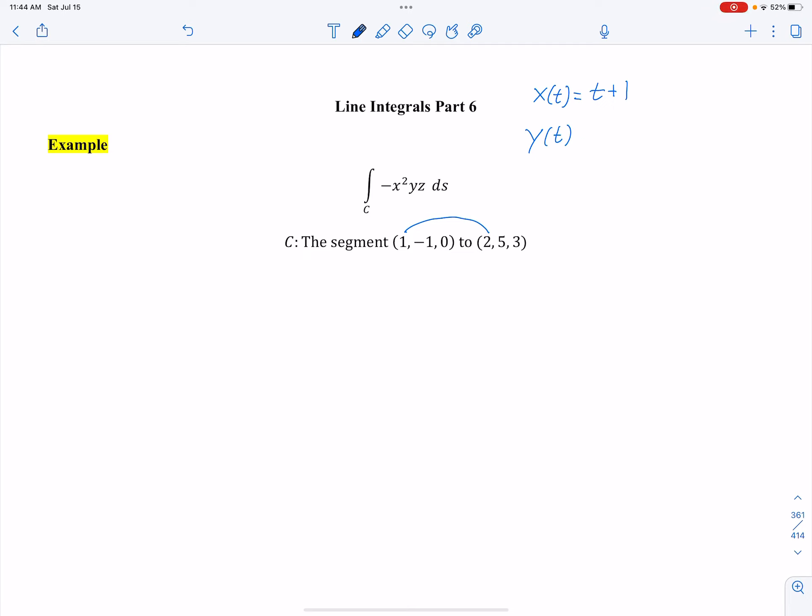y of t: negative 1 up to 5 is a 6, so the rate is 6t. And then we put where we start, which is minus 1. z of t started at 0 and went up 3, so it's 3t. And then you put where you started, which was 0.